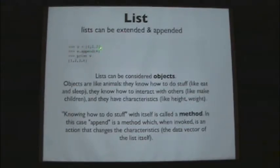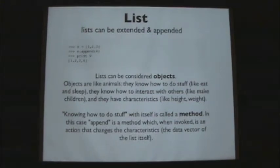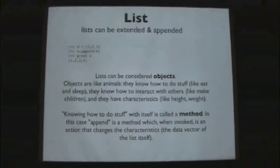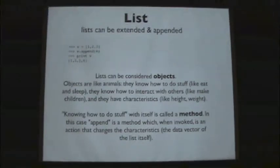We think of lists as objects, like animals — they know how to do stuff (methods) and have characteristics (attributes). The append method, denoted with a dot, is an action that changes the data of the list itself. There's actual data associated with this list V and a bunch of methods. Appending minus-5 as a list rather than just a number gives a 5-element list with 4 ints and 1 list as an element.